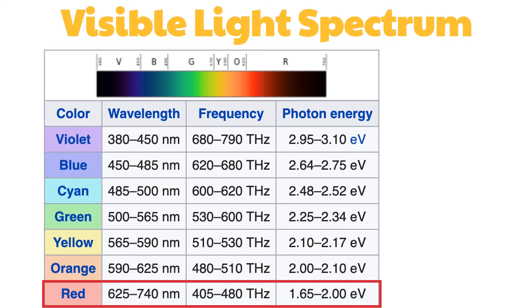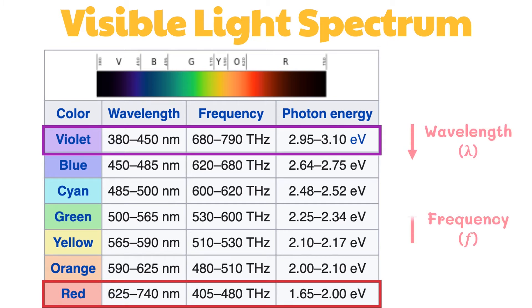On the other hand, violet light has the lowest wavelength and highest frequency. As the wavelength decreases, the frequency increases. Thus, the color we perceive gradually changes from red to orange, yellow to green, then blue to violet.